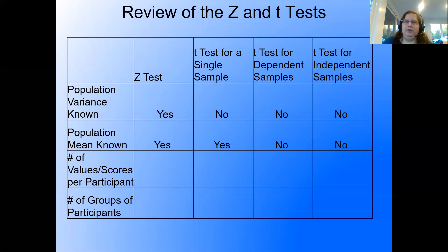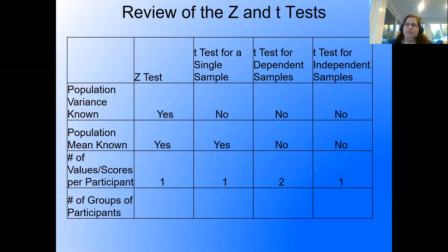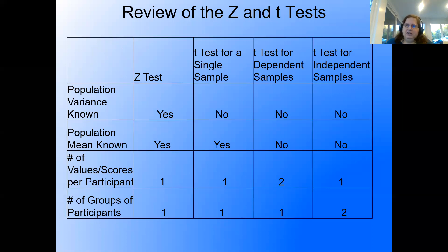Regarding the number of values or scores per participant: we've only talked about one test with two values per participant — the t-test for dependent samples, which has a before and after score, or pre-test and post-test score. For the number of groups: only one test has two separate samples of participants, and that's the t-test for independent samples. Since the formulas differ across tests, you need to know which one you're working with.